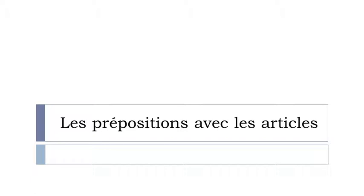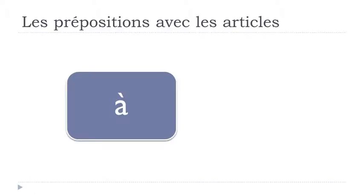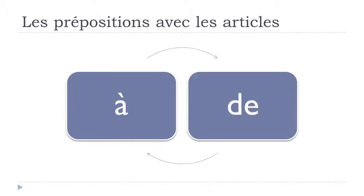So first, in this video, we'll work on A and then DE. Especially when you combine these two prepositions with articles, we'll see first the indefinite articles, les articles indéfinis: un, une, des. And after that, we'll see les articles définis: le, la, les.